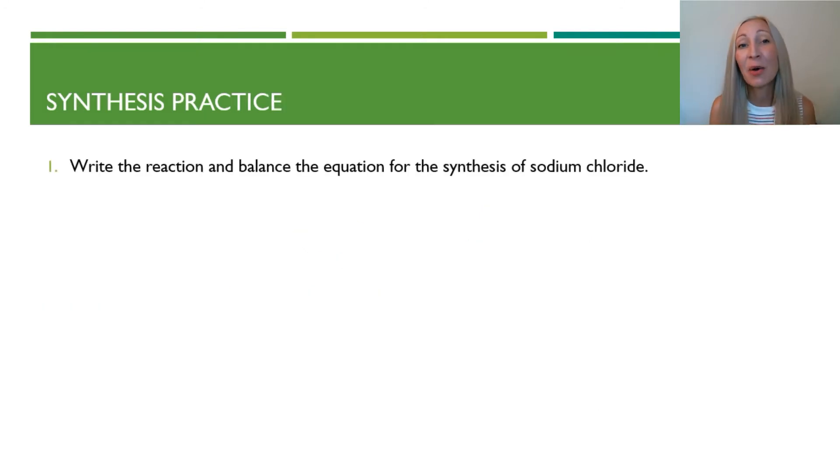Now I want you to pause the video and write and balance the equation for the synthesis of sodium chloride. Now it's really important that you actually work through this question before you see the answer. That way you can go in and diagnose any mistakes that you made along the way. So we are going to write the reaction and balance the equation for the synthesis of sodium chloride. Now sodium chloride is an ionic compound because it contains a metal and a non-metal, or a cation and an anion.